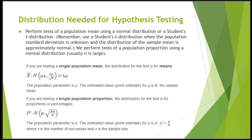Earlier in our course we discussed sampling distributions. Particular distributions are associated with hypothesis testing. We perform tests of a population mean using a normal distribution or a Student's t-distribution. We use the Student's t-distribution when the population standard deviation is unknown and the distribution of the sample mean is approximately normal. We perform tests of a population proportion using a normal distribution, and usually our sample size is large.